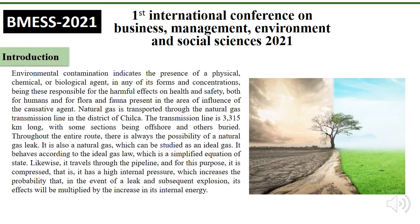Natural gas is transported through the natural gas transmission line in the district of Chilca. The transmission line is 3,315 kilometers long, with some sections being offshore and others buried. Through the entire route there is always the possibility of a natural gas leak. Natural gas can be studied as an ideal gas and behaves according to the ideal gas law, which is a simplified equation of state. It is transported through the pipeline under high internal pressure, which increases the probability of a subsequent explosion with effects multiplied by the increase in internal pressure.